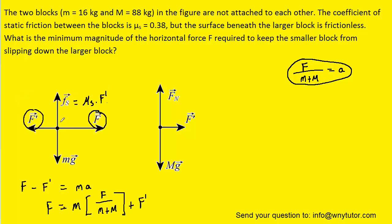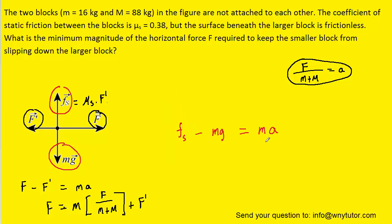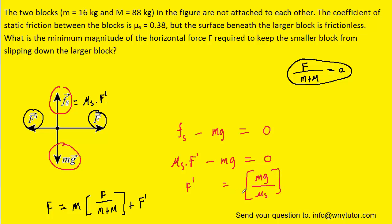Now we apply Newton's second law to the smaller block in the y direction. There are only two forces in the y direction: the upward positive static frictional force and the downward negative gravitational force. Since the small block is not accelerating vertically, acceleration equals zero and the right-hand side becomes zero. Recalling that the static frictional force equals mu_s times F prime, we solve this equation for F prime by adding mg to the other side and dividing by mu_s.